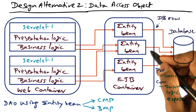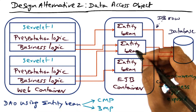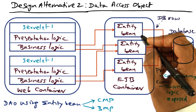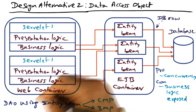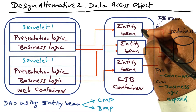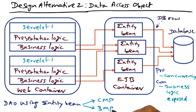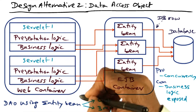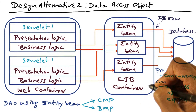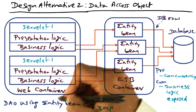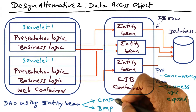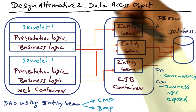Entity beans usually deal with persistent state, which means that persistence has to be provided at some level to these entity beans and the data access objects using them. This can be done at the level of individual entity beans, which is called bean managed persistence — where the bean manages its own persistence needs. Alternatively, the container can provide that facility, which is called container managed persistence.